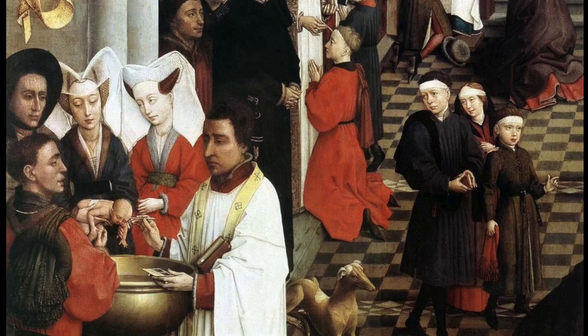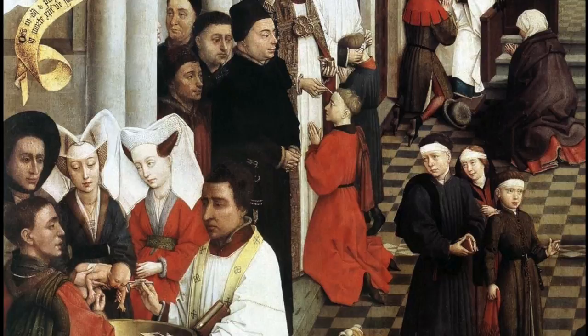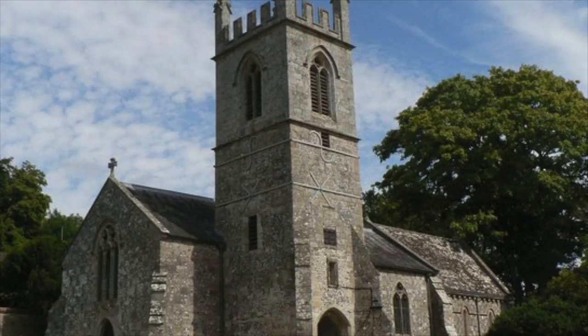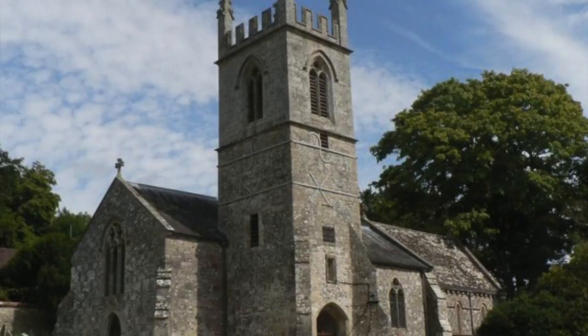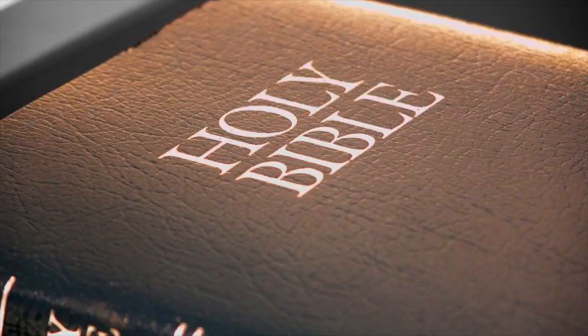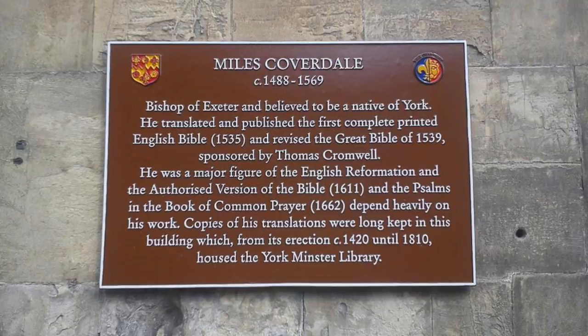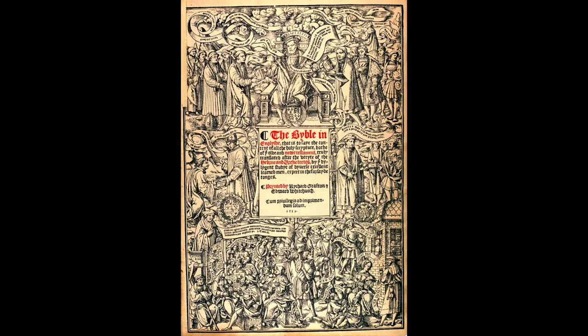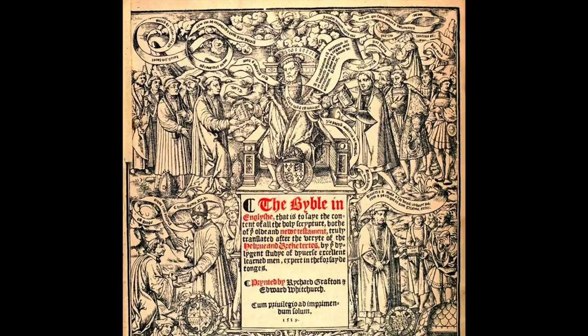In 1537, a more conservative Bishop's Book was introduced, which restored the four sacraments that had been omitted from the Ten Articles. The injunctions of 1538 also required each parish church to acquire an English Bible, and every person was encouraged to read it. The first official translation of the Bible was published in 1537, based on the works of Tyndale with contributions from Miles Coverdale. The first Great Bible was released in 1539, featuring a picture of the king graciously giving the word of God, with Cranmer and bishops on one side and Cromwell and politicians on the other.